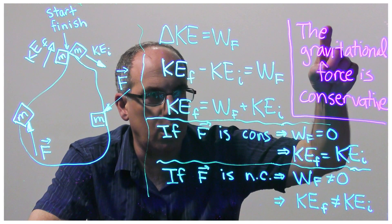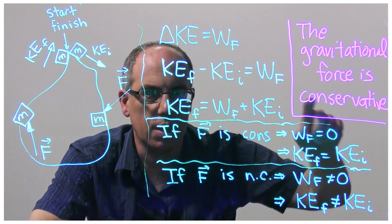We see that the bowling ball returns to my chin with a kinetic energy of zero, and thus we know that the gravitational force is conservative.